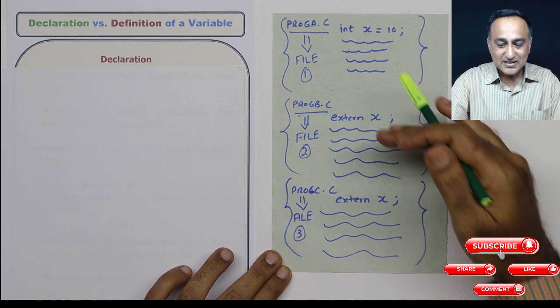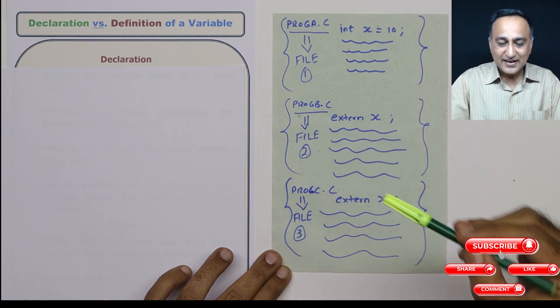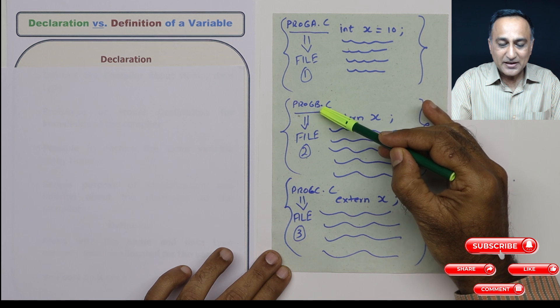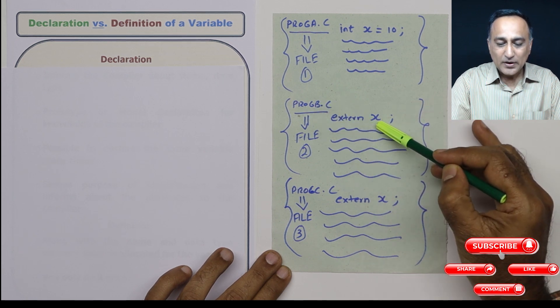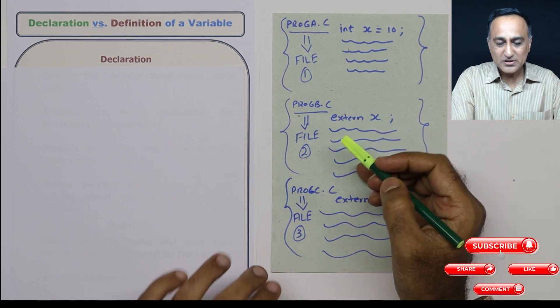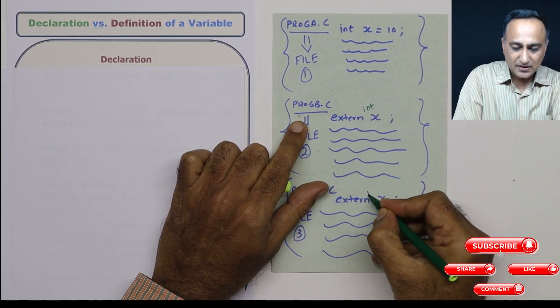So what this extern x and extern x declaration does is when the compiler is compiling this program b.c, it will look at x. Okay, I should say extern int x. So it should know the data type. Extern int x.